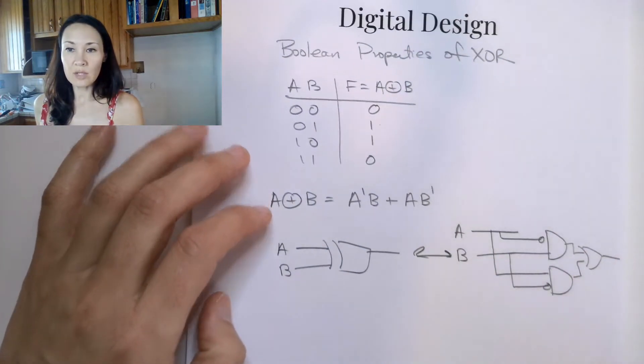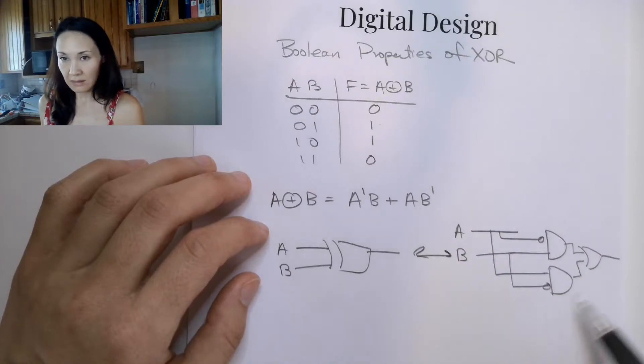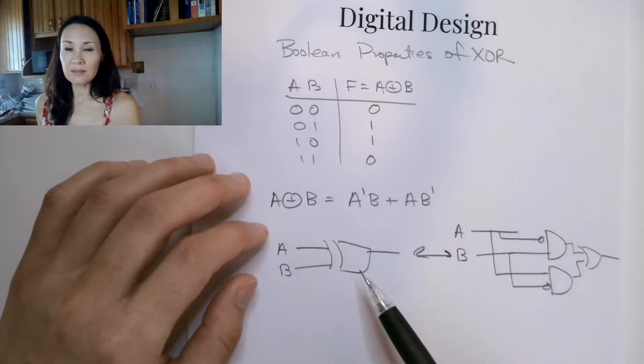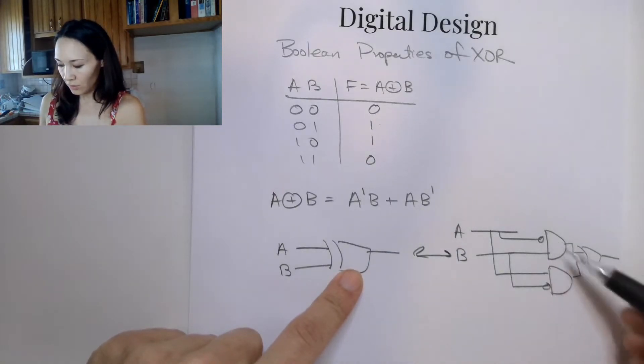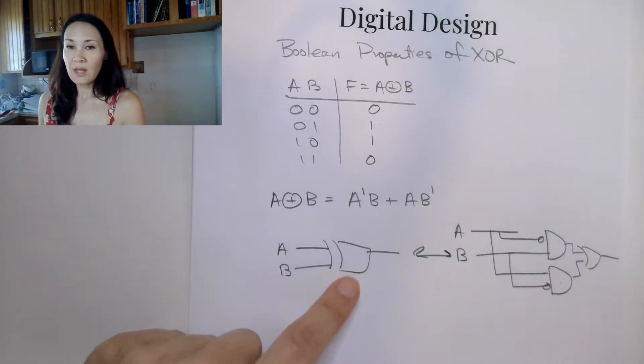So you might be asking, when would we ever implement this as opposed to this? Because this is just one XOR gate where this is two inverters, two ands, and an or.